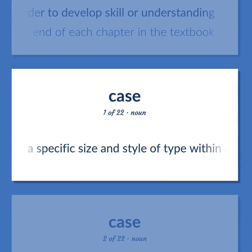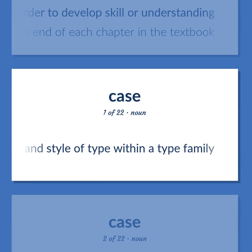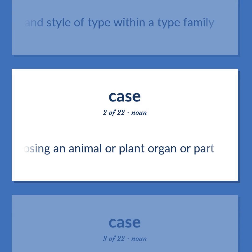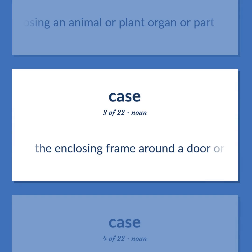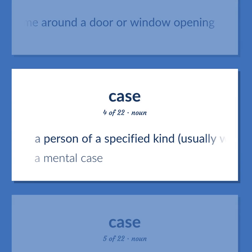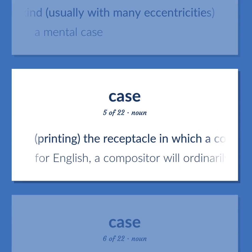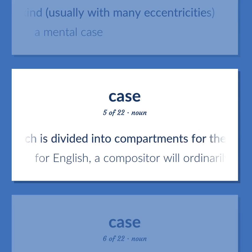CASE: A specific size and style of type within a type family. An enveloping structure or covering enclosing an animal or plant organ or part. The enclosing frame around a door or window opening. A person of a specified kind, usually with many eccentricities — a mental case. Printing: the receptacle in which a compositor has his type, divided into compartments for the different letters, spaces, or numbers.